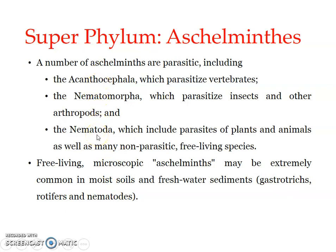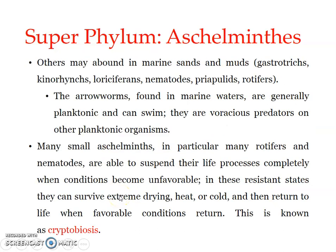A few phyla under the Aschelminthes superphylum include parasitic aschelminthes, while free-living forms are included under gastrotrichs, rotifers, and free-living nematode species. Others may be found in marine sands and muds — for example, Gastrotricha, Kinorhyncha, Loricifera, Nematoda, Priapulida, and Rotifera. Arrow worms are found in marine waters and are generally planktonic — they can swim, being voracious predators on other planktonic organisms, playing a very important role in the marine ecosystem.